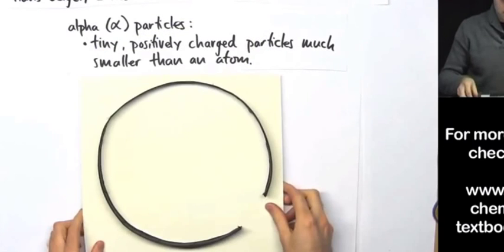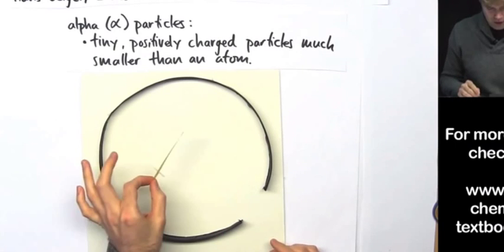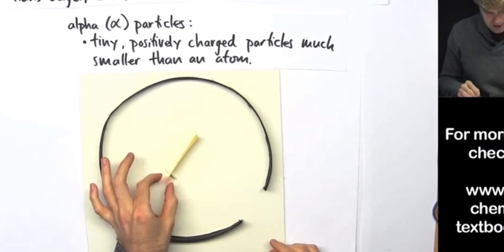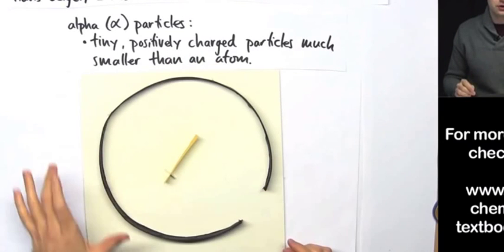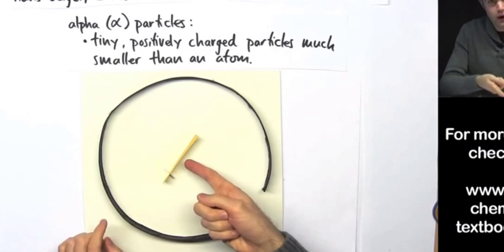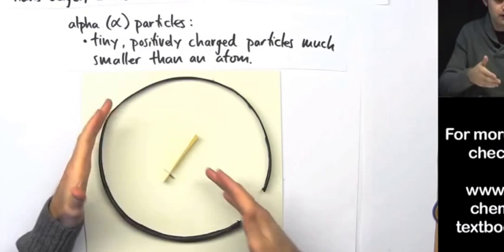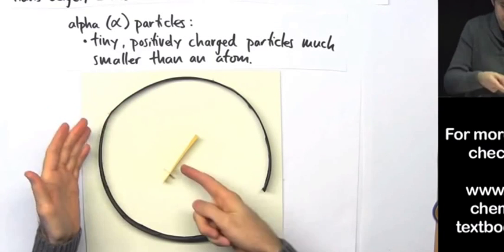They take this material and then they take their piece of gold foil and put it right here in the middle of the circle. So now they shoot alpha particles into the gold foil and they'll see a flash somewhere on the circle that will tell them where the alpha particle ended up after hitting the gold foil.